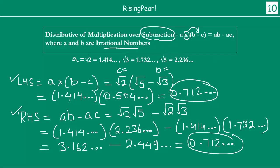So this concludes our operations on real numbers part 3. Today we discussed all operations and then commutative, associative, and distributive properties of irrational numbers. Hopefully you are following along. If you have any questions, comments, or clarifications needed, please leave a comment and we will try our best to help answer your questions.